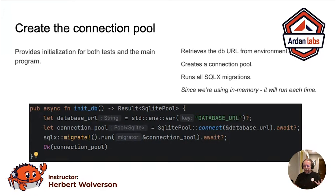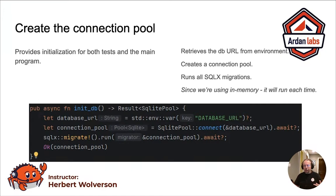SQLX has migrations built right in. So if you have the SQLX CLI migrate directory set up, then using the SQLX migrate macro with the exclamation mark, dot run, and give it a reference to the connection pool, will run whatever is in your migrate folder. And if you're on a persistent database, it actually creates a migrations table and tracks where you are,